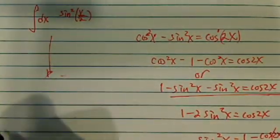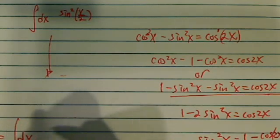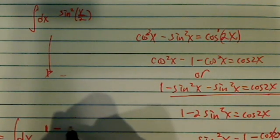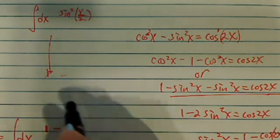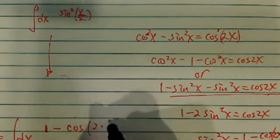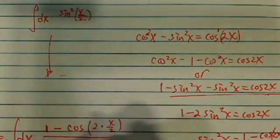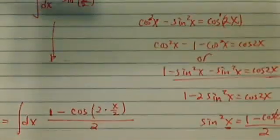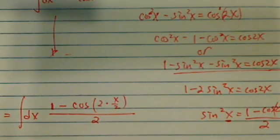We're going to transform it into dx. Instead of writing sine squared, we're going to write 1 minus cosine of twice the angle, the whole thing divided by 2.